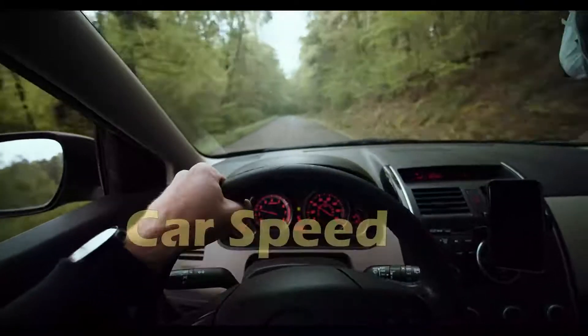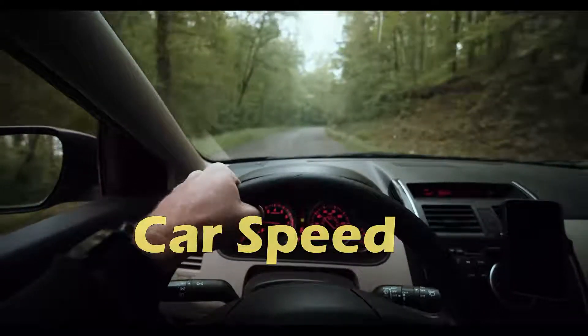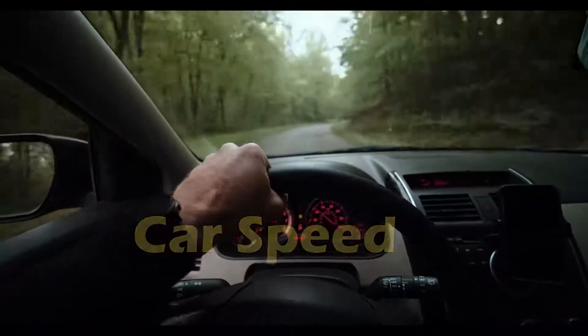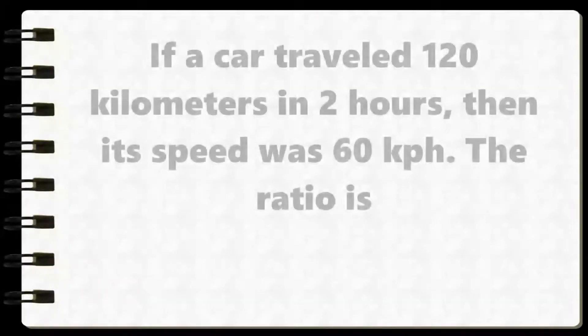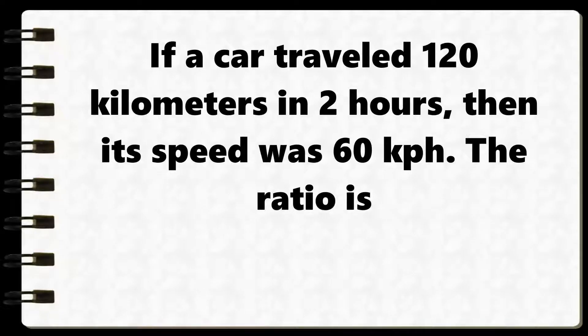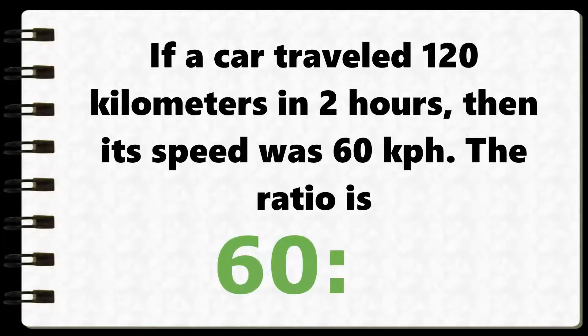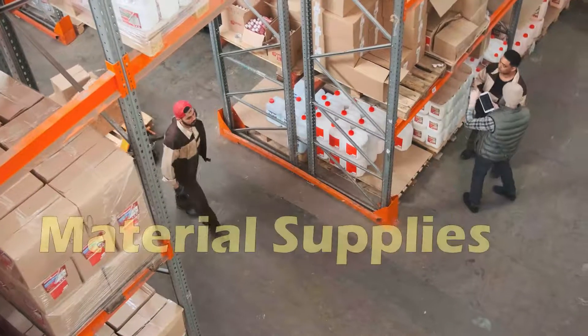Car speed: if a car traveled 120 kilometers in 2 hours, then its speed was 60 kilometers per hour. The ratio is 60 to 1.